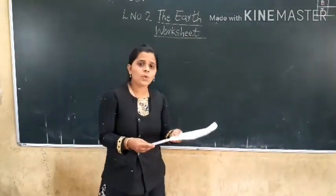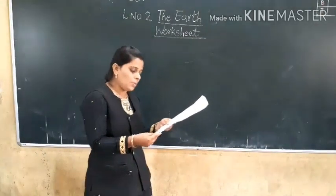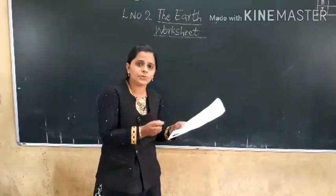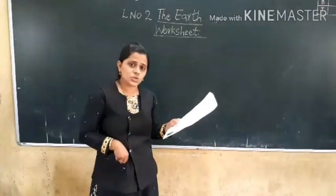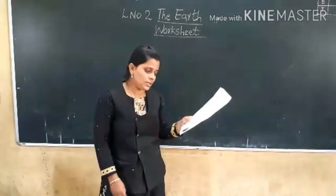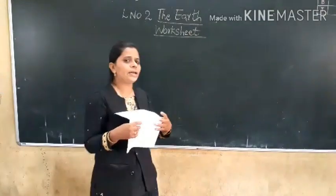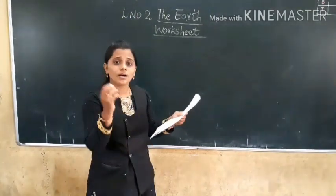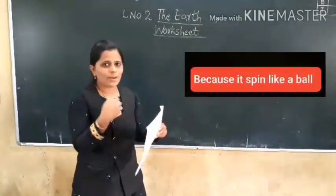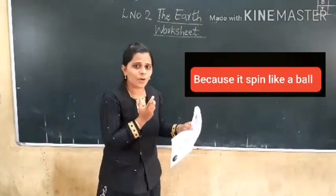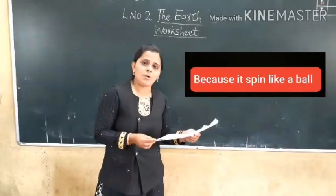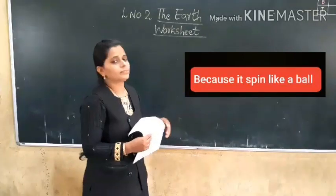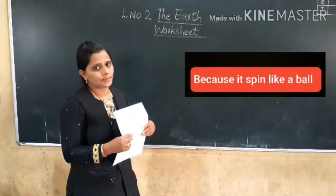Now we will see the second question. Study the diagram of the Earth spinning on its axis and explain. The first question is: How do we know that the Earth is round like a ball? Look at this picture carefully. Because it spins like a ball — you might know that a ball spins, and the Earth also spins like a ball. So we come to know that the Earth is round like a ball. The correct answer: Because it spins like a ball.